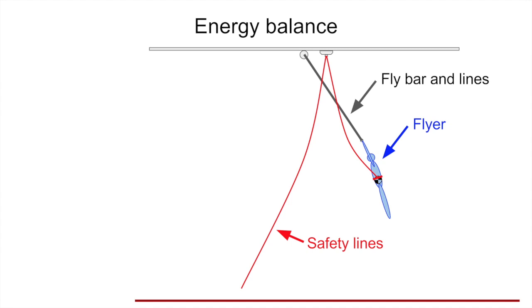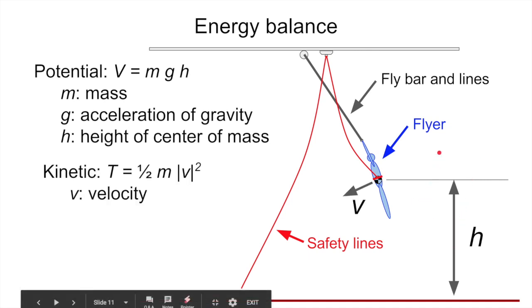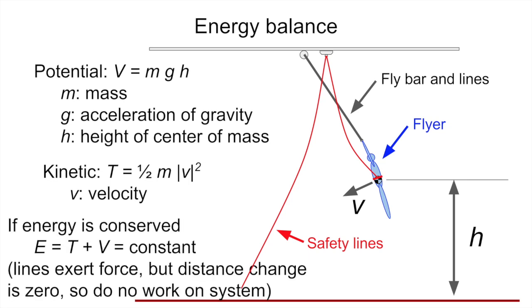Now, we can look a little bit more at the energy balance in the system, so we have the flyer, the fly bar, and the lines, and in this very simple model where we just think of the flyer as a point mass, there's a potential energy, which I label here as V, just mass times acceleration of gravity times the height of the center of mass, this h, mgh. And then there's a kinetic energy term, one-half mv squared, where v squared is the velocity of the center of mass, if you assume that it's just a point mass. And if energy is conserved, the total energy has to be a constant.